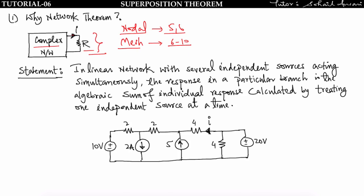In this tutorial we will be discussing the superposition theorem. The superposition theorem states that in any linear network with several independent sources acting simultaneously, the response in a particular branch is the algebraic sum of individual responses calculated by treating one independent source at a time.